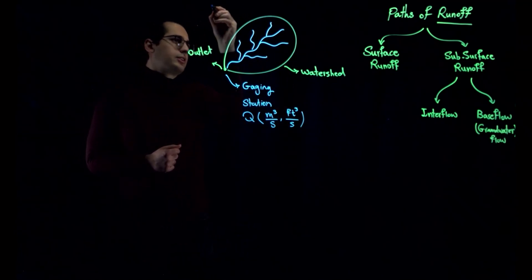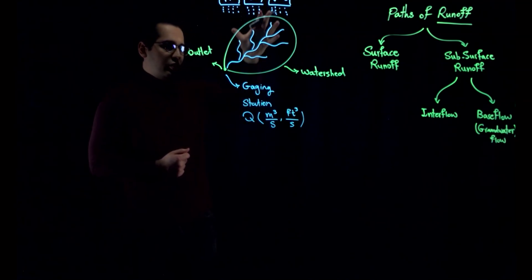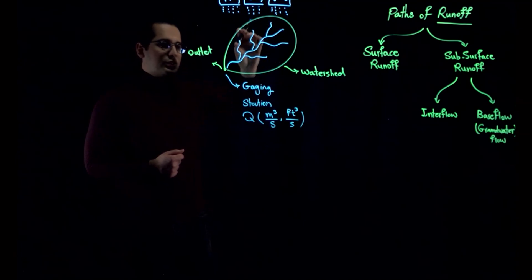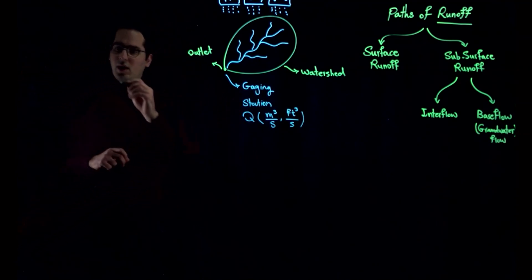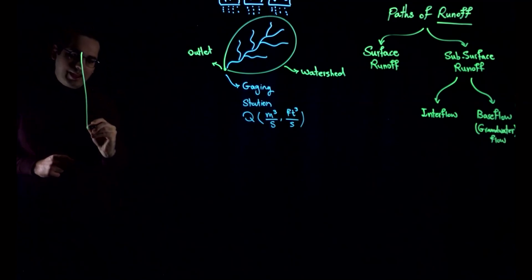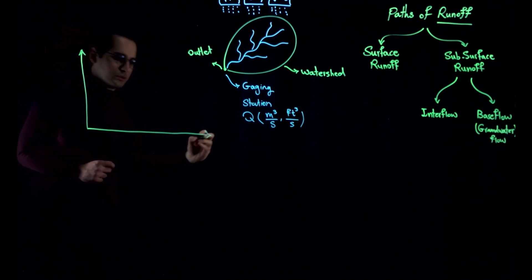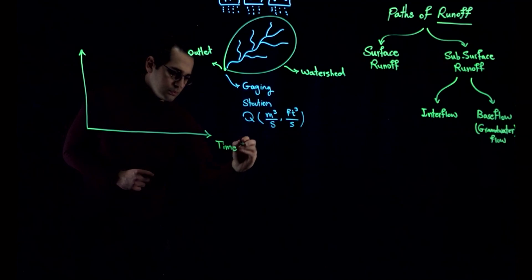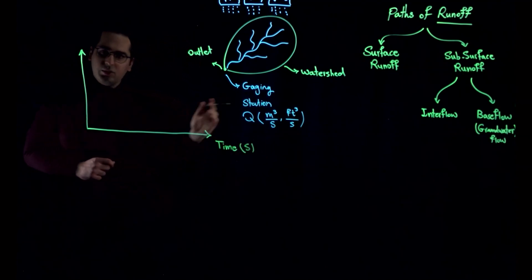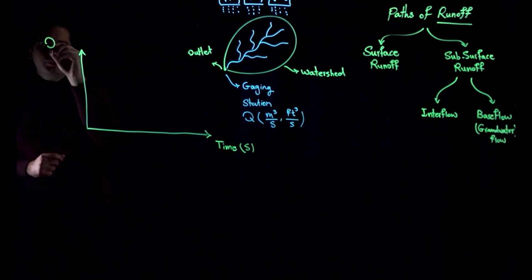Let's say that we have a rainfall event over this watershed. These are the clouds representing rain. This rain is going to generate some flow, and we will measure that flow using the gauging station. I am going to show you the resulting graph: on the x-axis we have time — seconds, minutes, or hours — and on the y-axis we have discharge, or Q, which is stream flow.